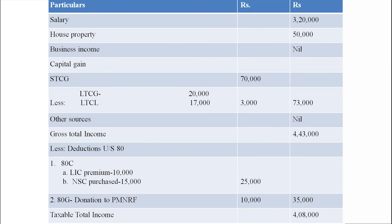The next step is allowing deductions under Section 80, that is Chapter 6A of the Income Tax Act 1961. We have three kinds of deductions. LIC premium and NSC purchase come under Section 80C. The maximum deduction under Section 80C is 1,50,000 rupees. Here we have LIC premium 10,000 — allowed — and NSC purchase 15,000 — also allowed. Total deduction under Section 80C is 25,000.